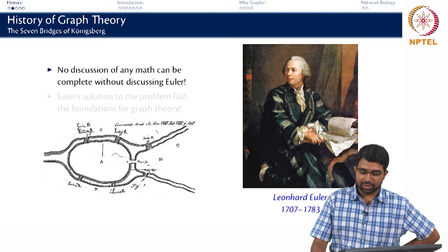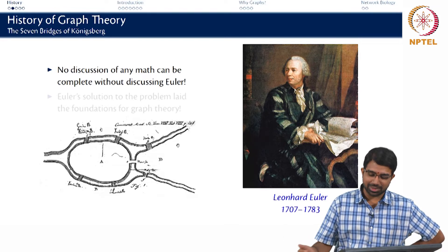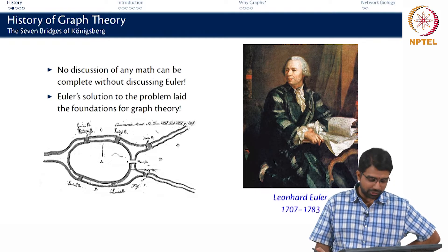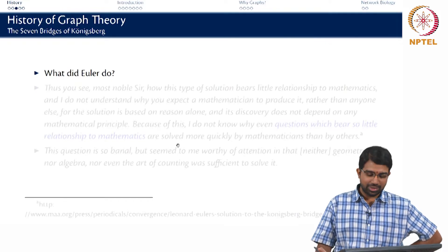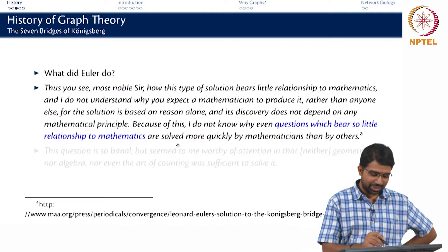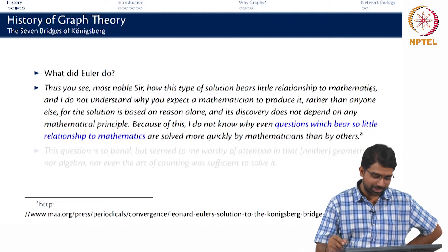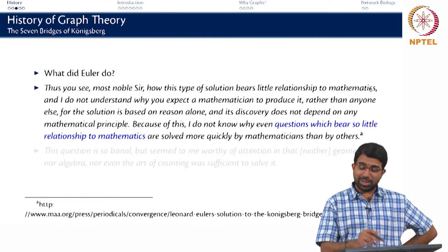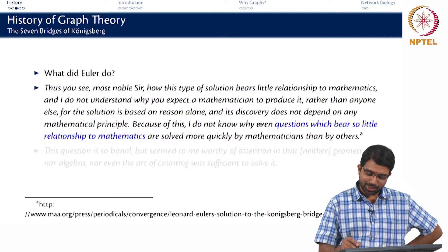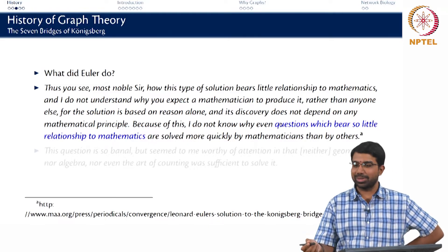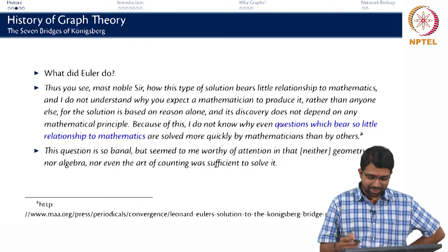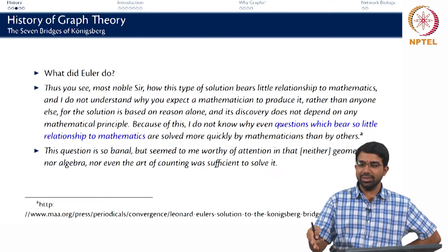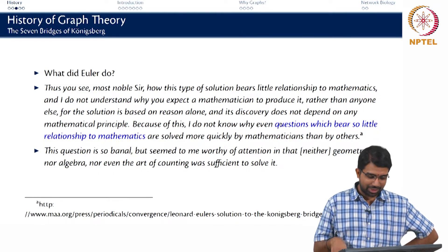As always, it was Euler who came up with the solution — we encounter Euler again when we look at dynamical systems, as he contributed to several branches. His solution essentially laid the foundation of graph theory. He wrote a very nice letter, essentially saying this type of solution has little relationship to mathematics and its discovery is based on reason but not any mathematical principle. Yet he noted that questions which have so little relationship to math are still solved better by mathematicians. The question was banal but worthy of attention because he could not use just geometry, just algebra, or just counting to solve it — he needed to draw on multiple concepts.